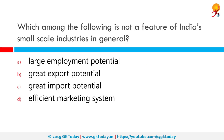Which among the following is not a feature of India's small scale industries in general? The correct answer is efficient marketing system. We can already tell that an efficient marketing system is not a part of small scale industries in general. Small scale industries refer to those small entrepreneurs engaged in production, manufacturing or service at a micro scale. They play a focal role in the economic and social development of India in the post-independence era.